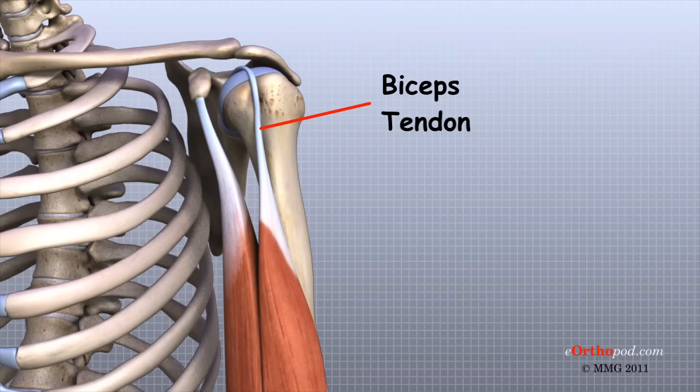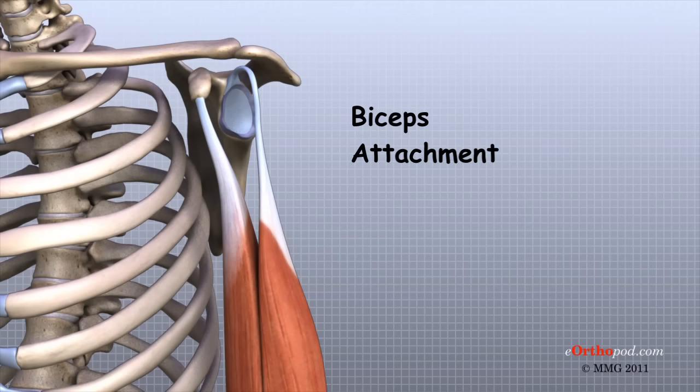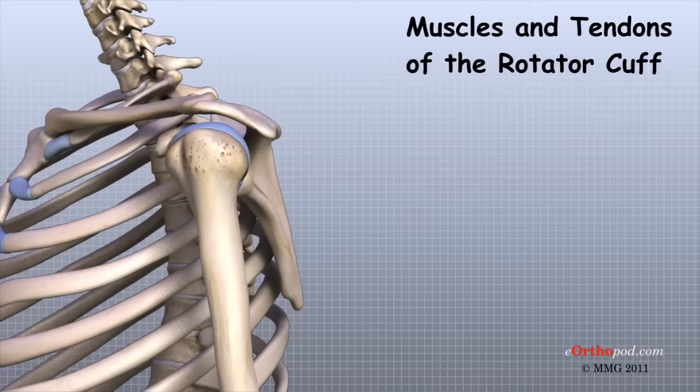Tendons are much like ligaments except that tendons attach muscles to bones. Muscles move the bones by pulling on the tendons. The biceps tendon runs from the biceps muscle across the front of the shoulder to the glenoid. At the very top of the glenoid, the biceps tendon attaches to the bone and actually becomes part of the labrum. This connection can be a source of problems when the biceps tendon is damaged and pulls away from its attachment to the glenoid.